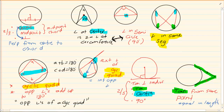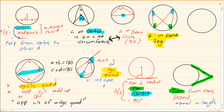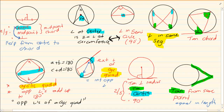The last theorem is the tan-chord theorem. An angle created from a tangent and a chord gives you an equal angle in the opposite segment. In other words, if you take the tangent and the chord, the angle it creates equals the angle in the opposite direction created by the same chord. This is another tangent theorem.